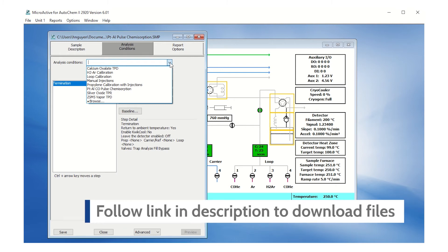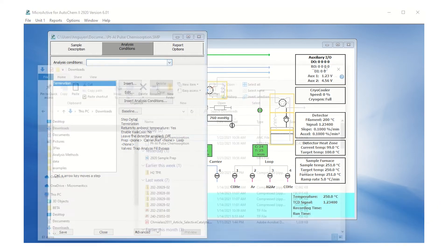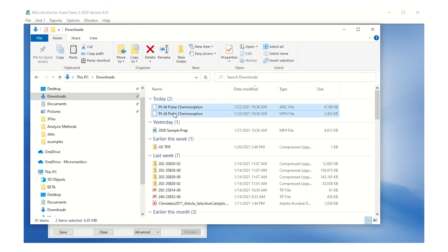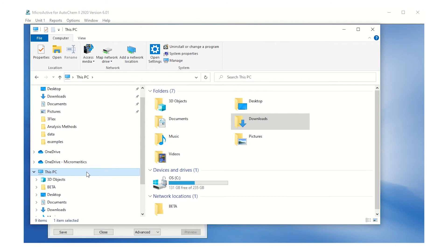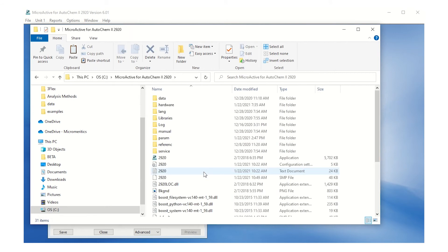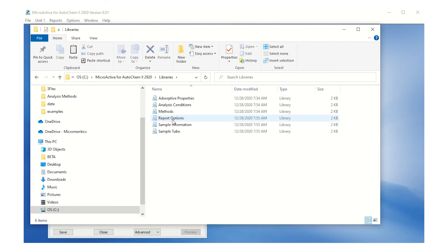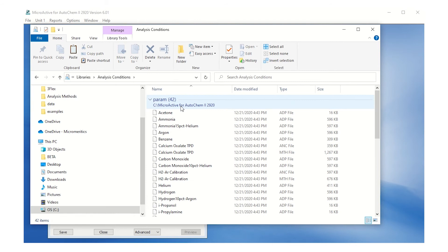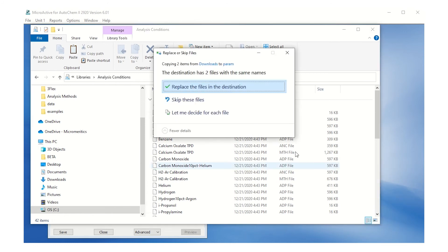Please follow the link to download the updated .ANC and MTH files. After downloading both files, copy the files and navigate to the Analysis Conditions folder. This is typically located in This PC, Drive C, Microactive for AutoChem 2 2920, Libraries, Analysis Conditions. Paste the downloaded files to this folder and replace over the existing files.